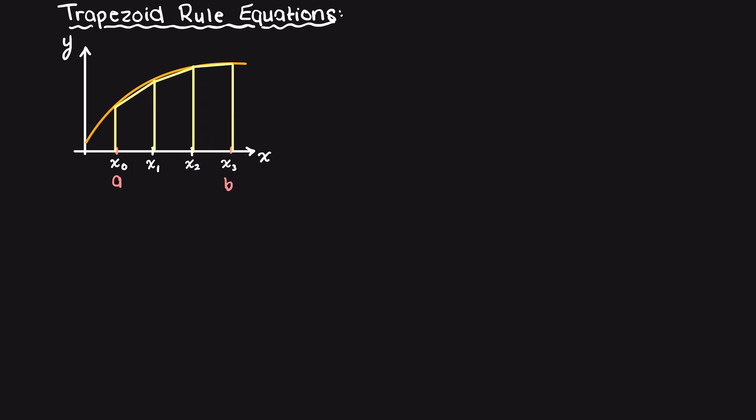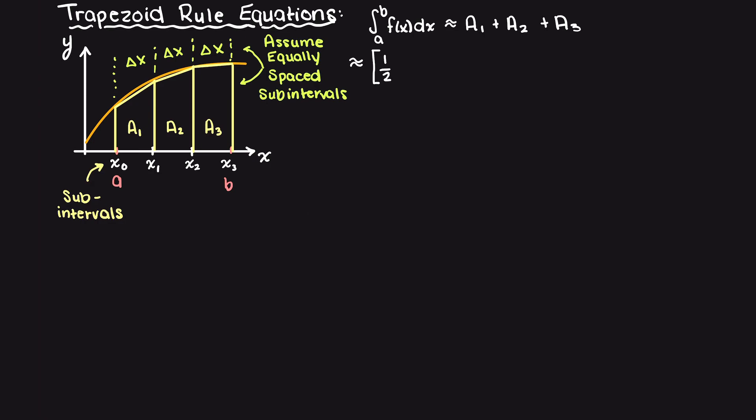We say that the exact integral is approximately equal to area 1 plus area 2 plus area 3. Area 1 is going to be ½ times our delta x times our two heights added together, which is simply our function evaluated at x0 plus the function evaluated at x1. Then we will continue this process for trapezoids area 2 and 3.